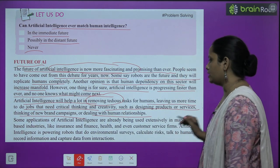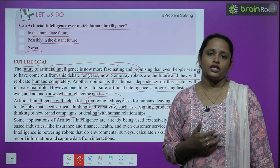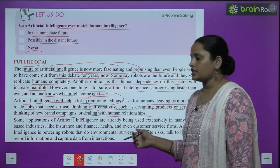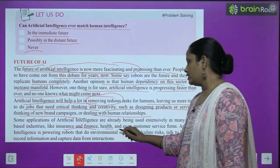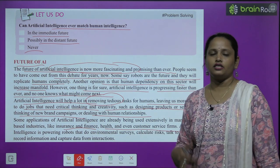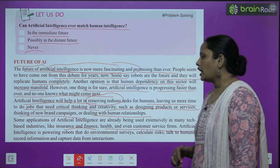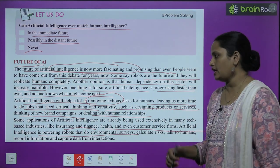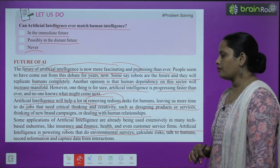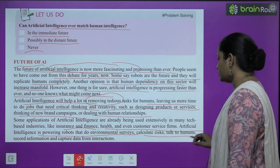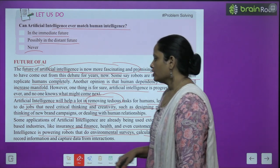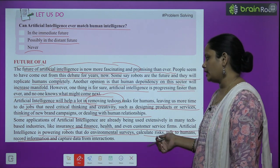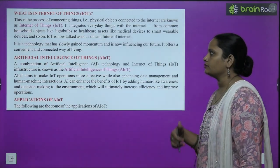Some applications of artificial intelligence are already being used extensively in many tech-based industries — जैसे insurance, finance, health and even customer service form। Artificial intelligence is powering robots that do environmental service — ये powering robots हैं जो environmental service करते हैं, risk calculate करते हैं, humans से बात करते हैं, records और information maintain करते हैं, और data capture करते हैं लोगों के interaction से।